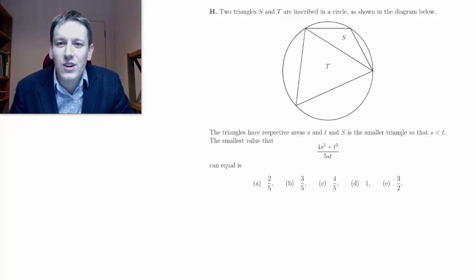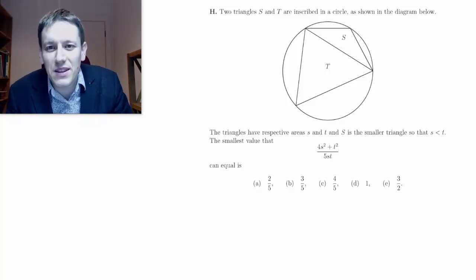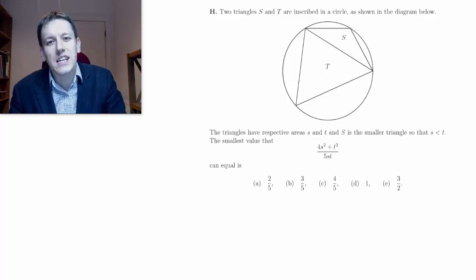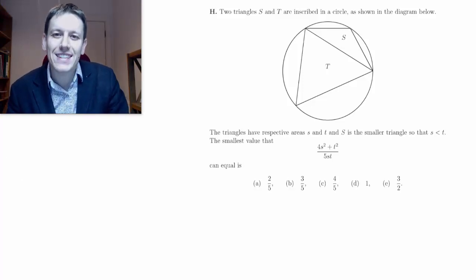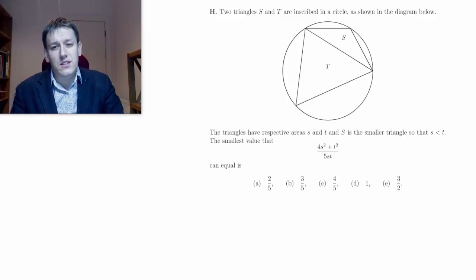Hi, in this video we're going to look at question 1h from the Oxford Math Submissions Test from 2018. So we've got two triangles, s and t, inscribed in a circle, as shown in this diagram.